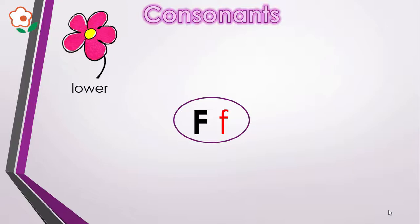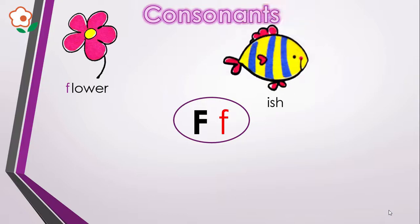Say flower and listen carefully. Flower. Flower is producing F in the beginning. We will write F here. Next we have our fish. Say fish and listen carefully. Fish.